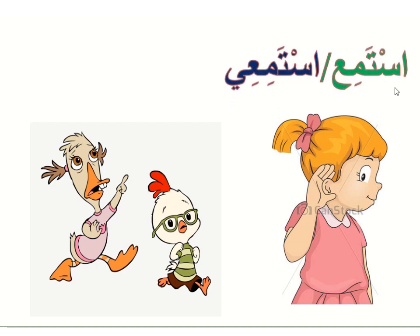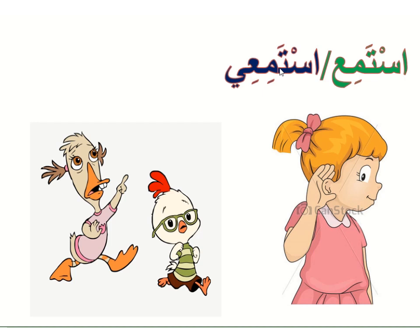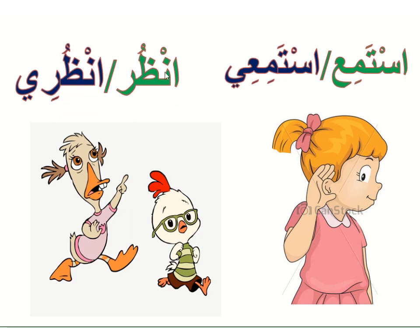Istami' — listen for boys. Istami'ī — listen for girls. Unzur — look for boys. Unzurī — look for girls. So: Istami', Istami'ī, Unzur, Unzurī.